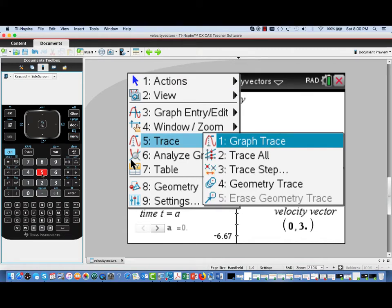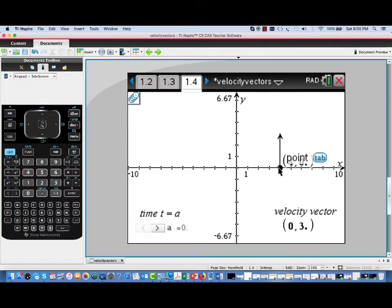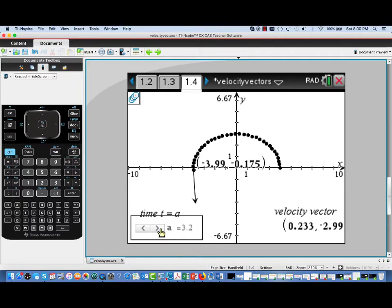Now to illustrate, I'm going to actually turn on the geometry trace, select our current position point, and then I'm going to drive time forward. And we can see it tracing out the positions. And notice that the velocity vector is hooked onto the moving particle, showing us the direction that it will be moving. And so this is a very nice way to visualize the meaning of a velocity vector.